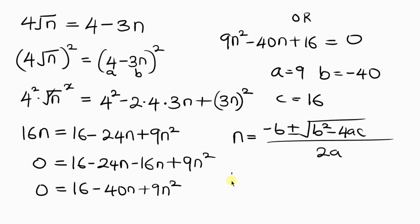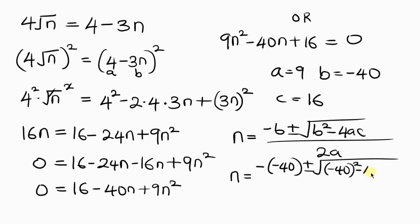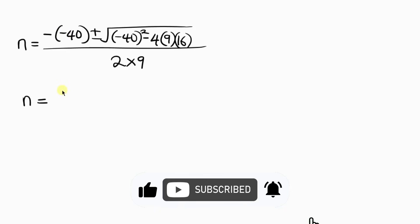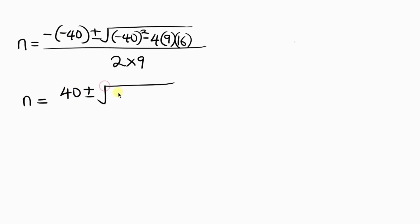Substituting: n equals negative b — b is negative 40, so this becomes positive 40 — plus or minus the square root of negative 40 squared (that's 1600) minus 4 times a (which is 9) times c (which is 16), giving 576. All over 2 times a, which is 2 times 9, equaling 18. So n equals 40 plus or minus the square root of 1600 minus 576, which is 1024, all over 18.